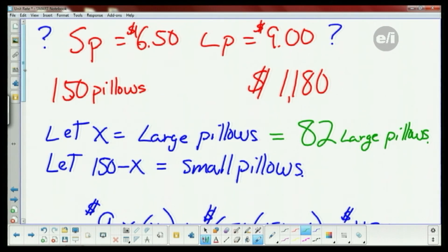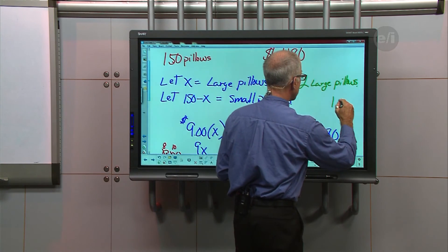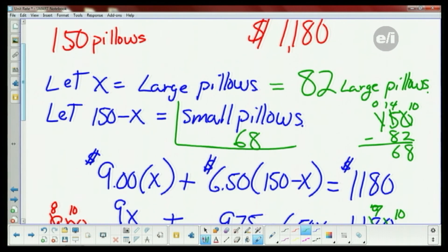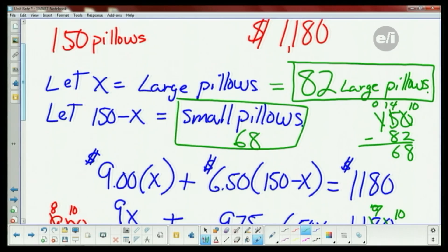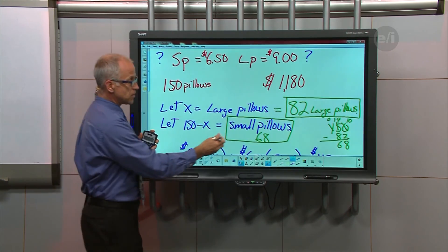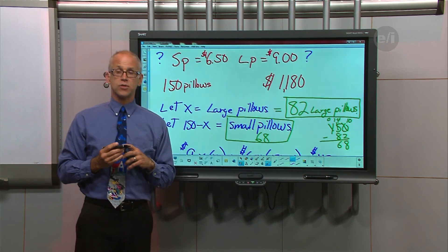We're not done yet because we also need how many small pillows were sold. I take 150 subtract 82. I can't take two from zero so I borrow — ten take away two is eight, then fourteen take away eight is six — giving me 68 small pillows. I'll put a box around both answers: 82 large pillows and 68 small pillows. These add up to 150, and the money generated should also add up to one thousand one hundred and eighty dollars.